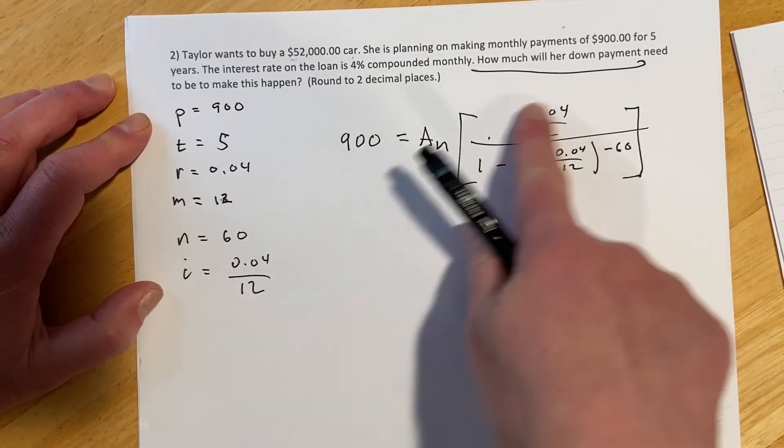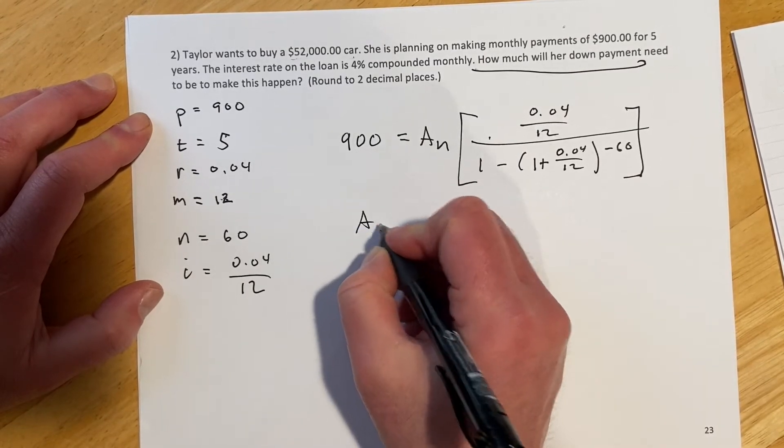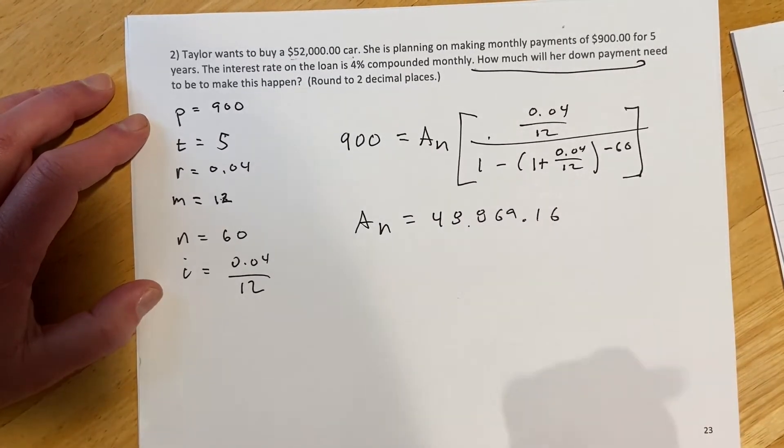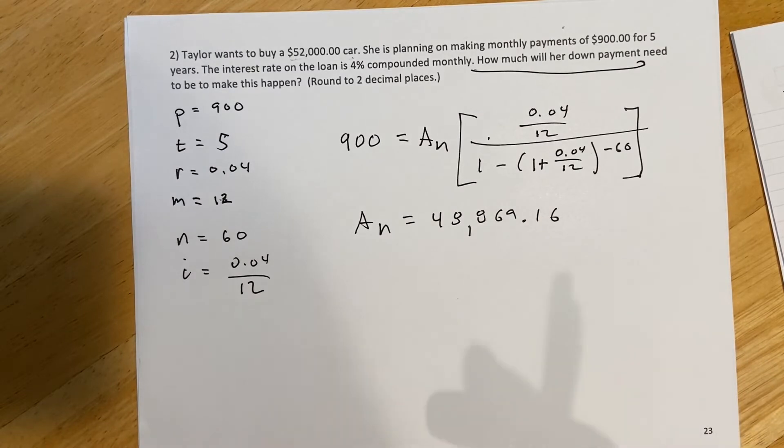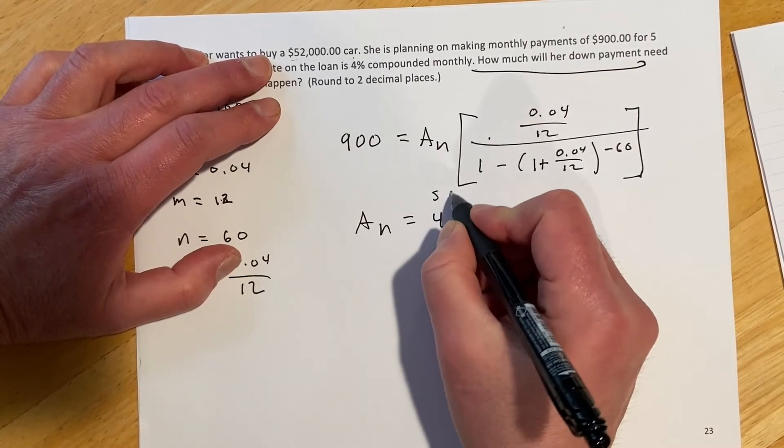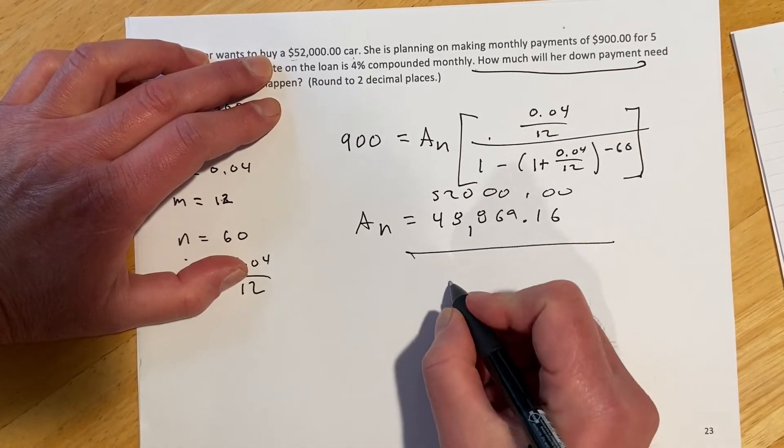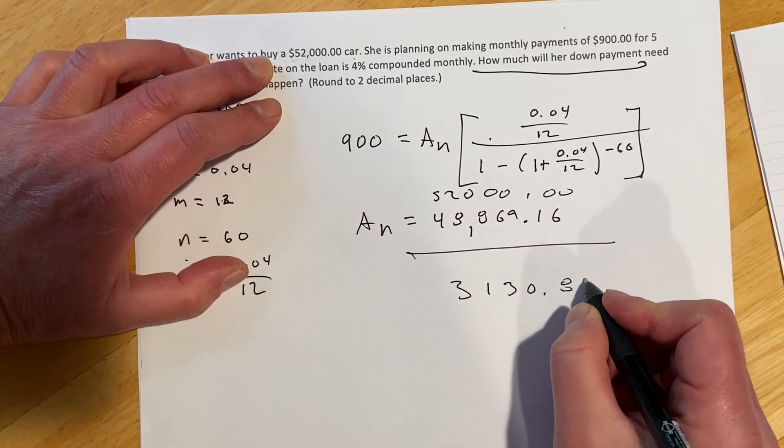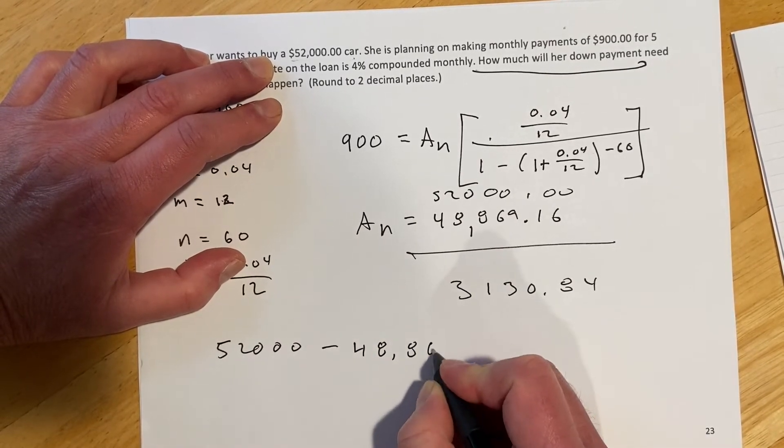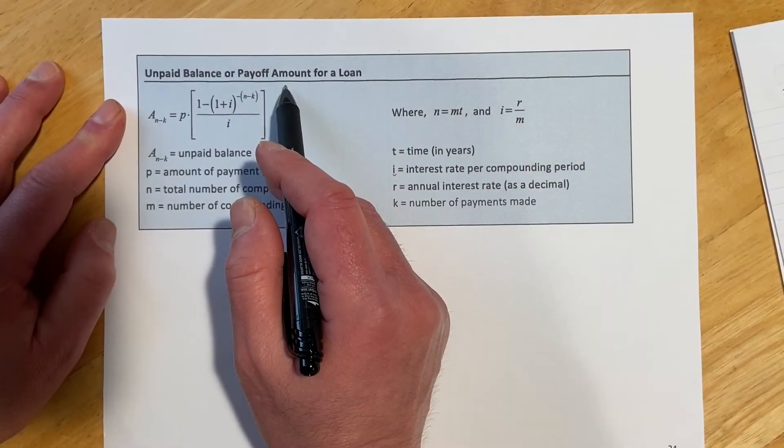Okay, so just have everything set up in the formula. So again, I put all this in the calculator and then go 900 divided by that number. And then that gives me A sub N as $48,869.16. But again, that's not the answer in this case, because that wasn't the question. The question wasn't how much money she borrowed. The question is how much does she have to put down? So we'd have $52,000 and then take away this. So the price would be $52,000 and then we're taking away the loan amount. And then that equals the down payment.